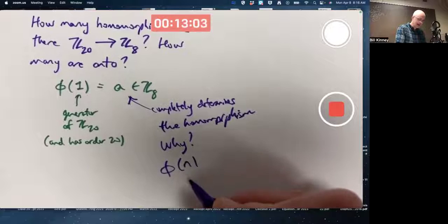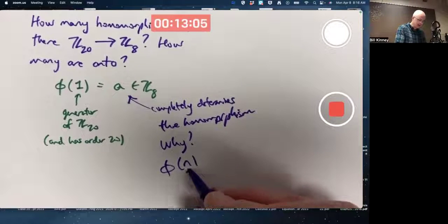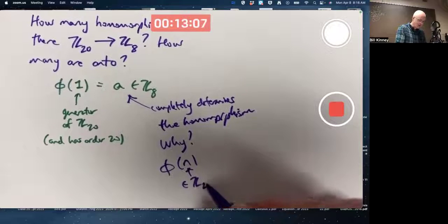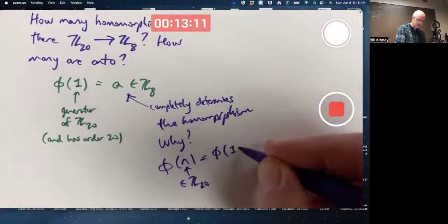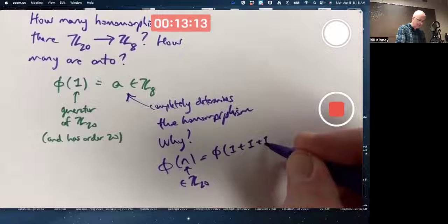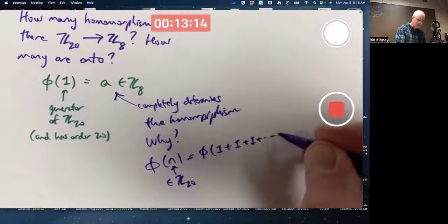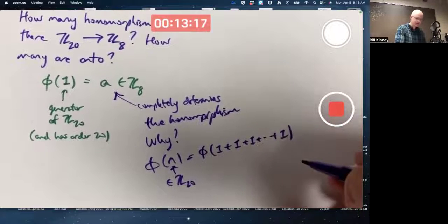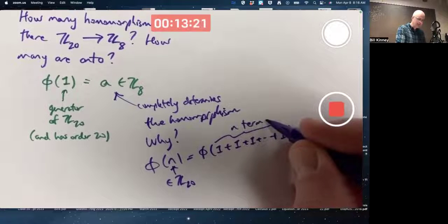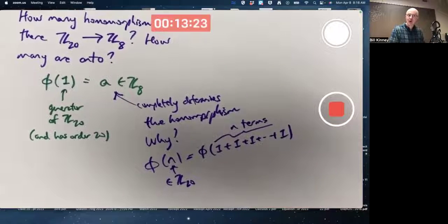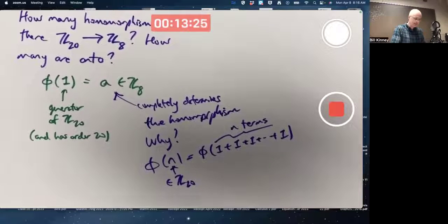Because if you have an arbitrary element of the domain, call it N in Z20, one's a generator. We know N is going to be one plus one plus one plus one, et cetera, with N terms. Yes, we are doing addition mod 20, but if N is less than 20, then you don't have to think about modding.